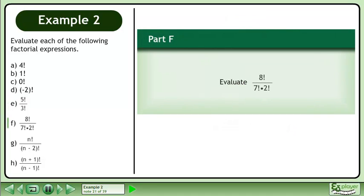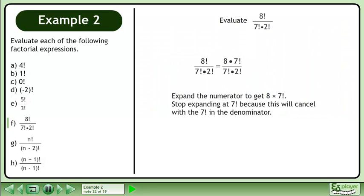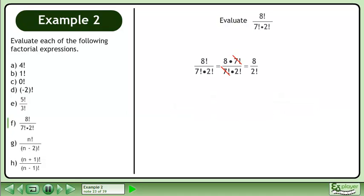In Part F, evaluate 8 factorial over 7 factorial times 2 factorial. Expand the numerator to get 8 times 7 factorial, and stop expanding at 7 factorial because this will cancel with the 7 factorial in the denominator. Cancel 7 factorial from the numerator and denominator to get 8 over 2 factorial. In the denominator, 2 factorial equals 2. The answer is 4.